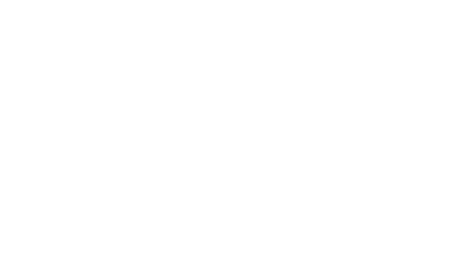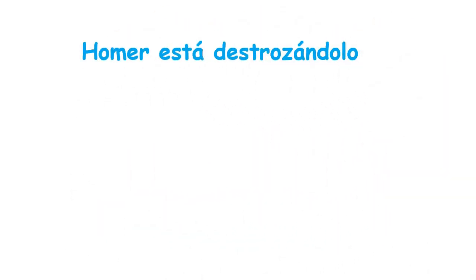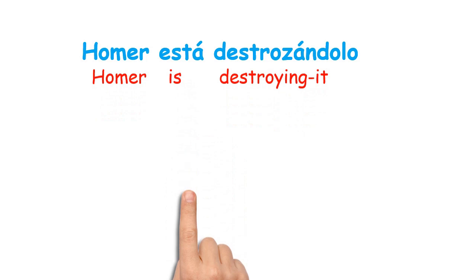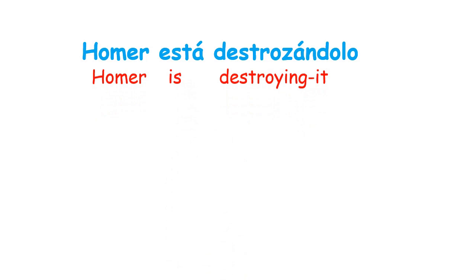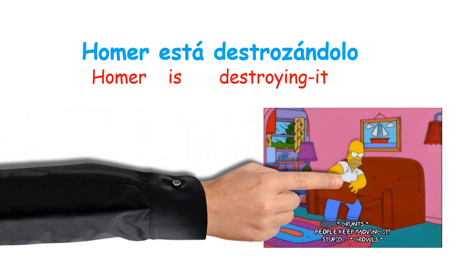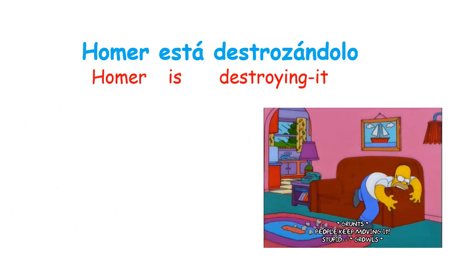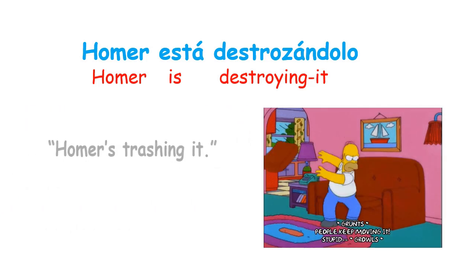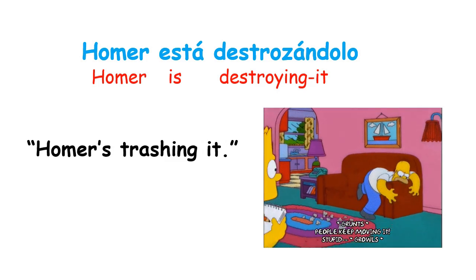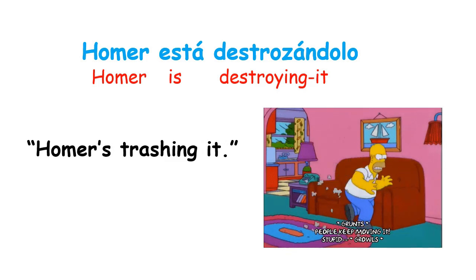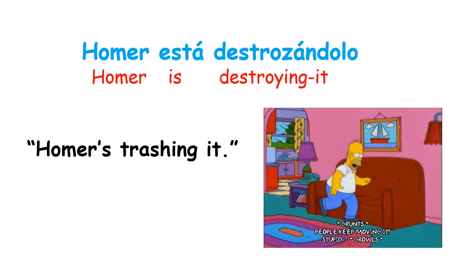Okay, so now what about the next one? The second sentence is Homer está destrozándolo, which literally word by word translated means something like Homer is destroying it. And Homer is still destroying it. Given a better English translation, it would be something like Homer's trashing it. Exactly the same, by the way, as the last example.